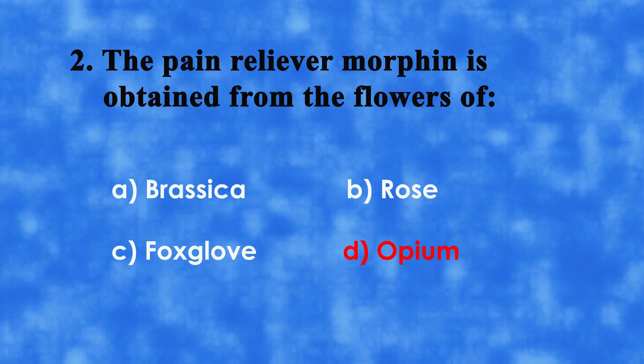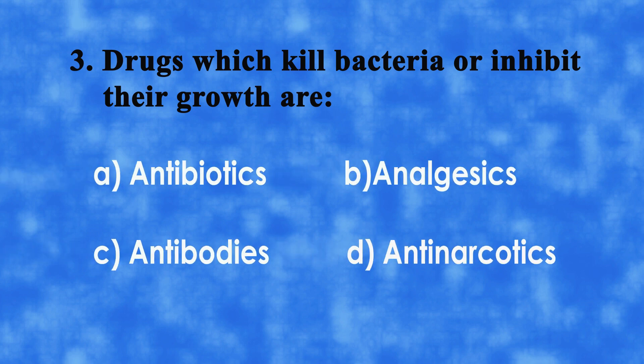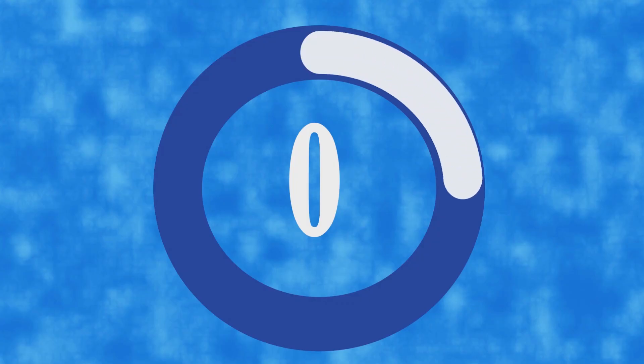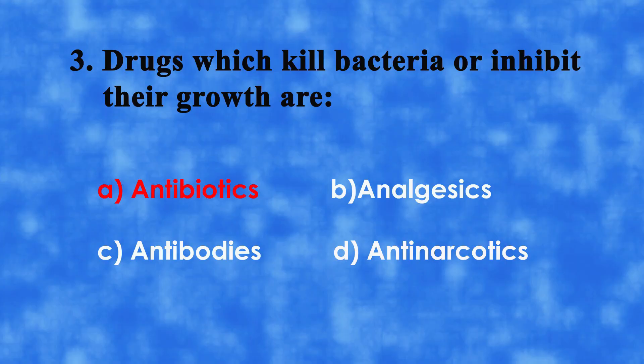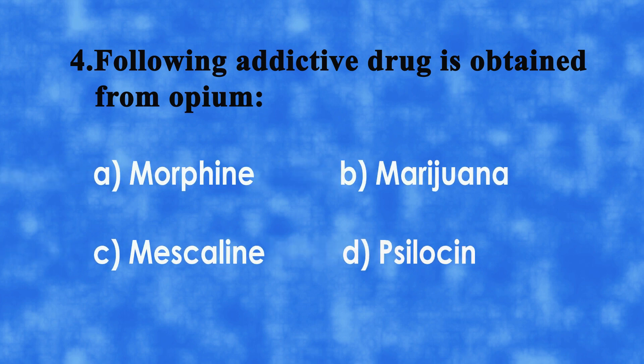No. 3: Drugs which kill bacteria or inhibit their growth are A. Antibiotics, B. Analgesics, C. Antibodies, or D. Antinarcotics. The correct answer is A. Antibiotics.